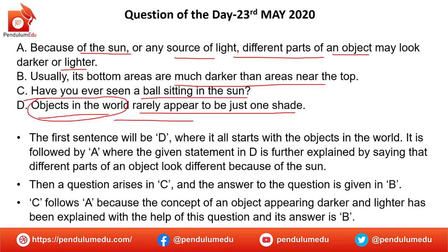In this question, in the beginning you will be given the main subject sentence. It means that 'Objects in the world rarely appear to be just one set' will be the first one. In this way, you will get the order step by step. You can also see this in the options. In this question, there is one option in the first position. You will identify that the first statement will be solved. You will not see any further. Okay, students?